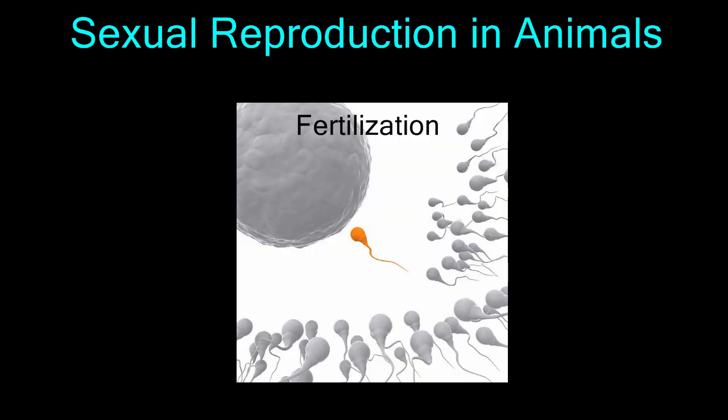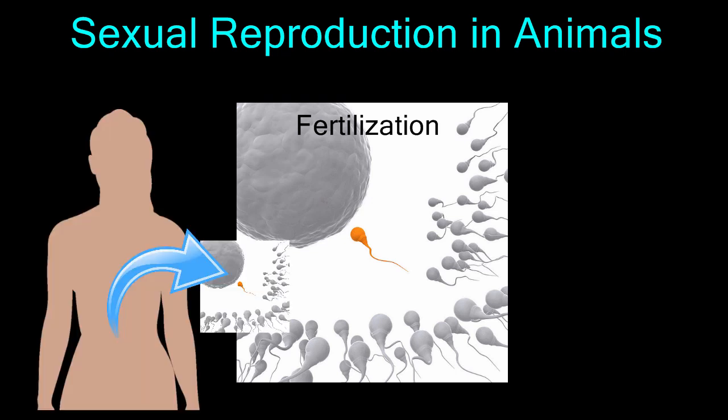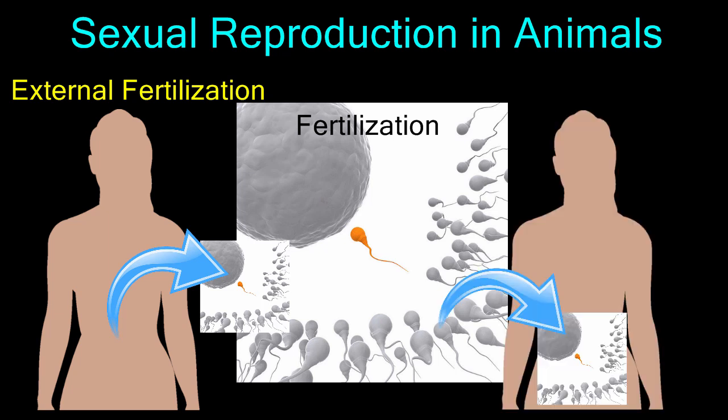In order for sexual reproduction to be complete, egg and sperm must fuse during fertilization to produce a zygote. There are two locations where fertilization can take place in animals: outside the body, as in external fertilization, and inside the body, as in internal fertilization.